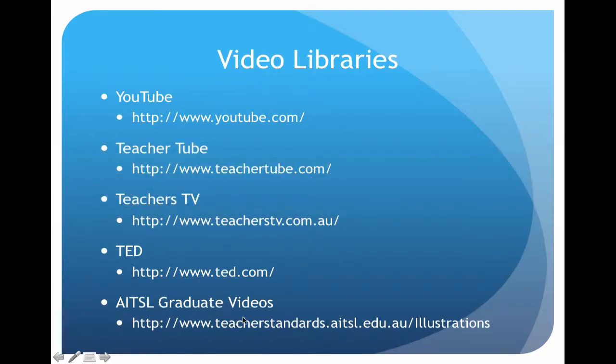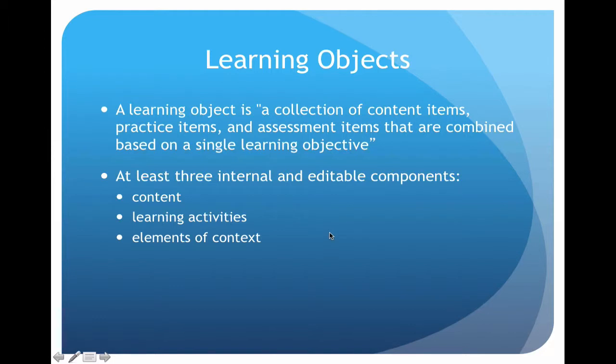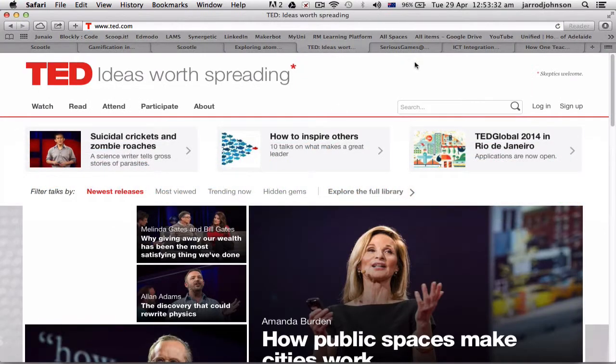A learning object is a collection of content items, practice, and assessment combined to achieve a single learning objective. You really want to make sure it's got the content, e-learning activities, and the elements of context. For example, if you're running a unit plan on atoms, you'd want a learning object that covers the content about atoms, learning activities that students can participate in, and a reason for putting that in the class.